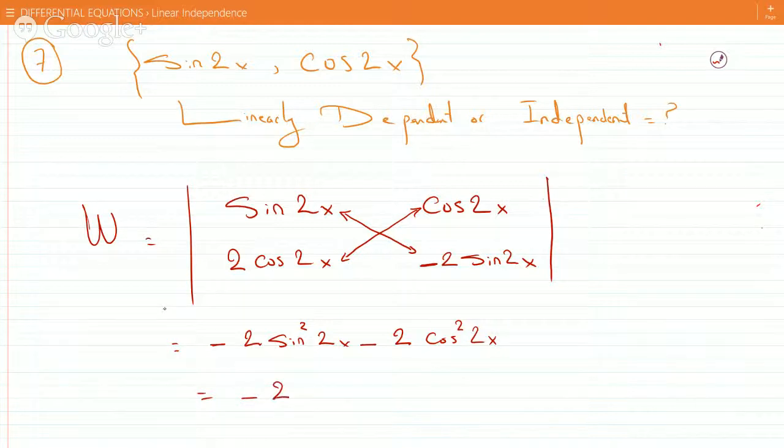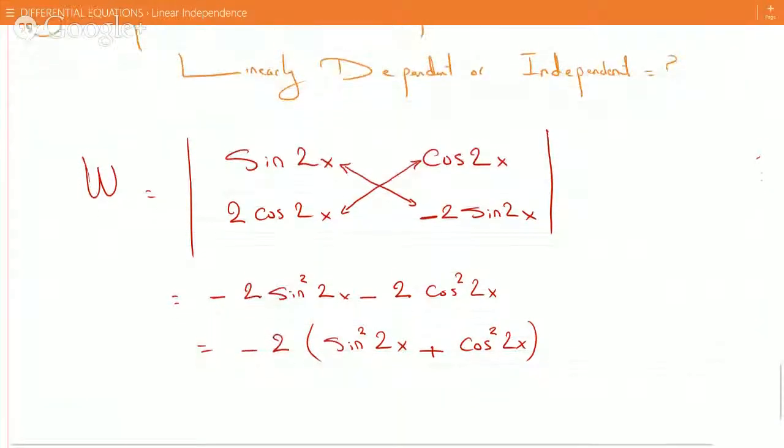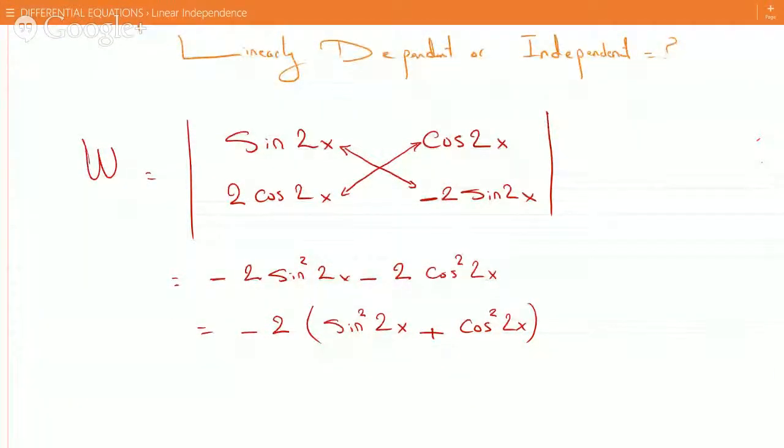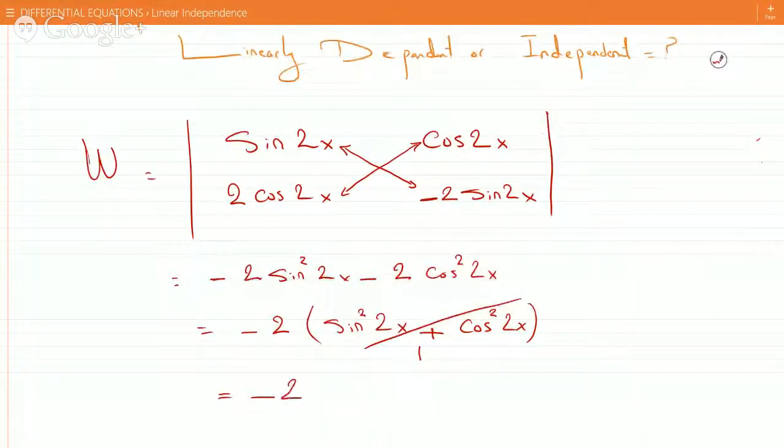And it actually works out fairly nicely, because if you factor out the 2, you get sine squared 2x plus cosine squared 2x, and sine squared 2x plus cosine squared 2x is just 1. So this whole thing is 1. So the answer is minus 2, completely independent of x, and does not equal 0.